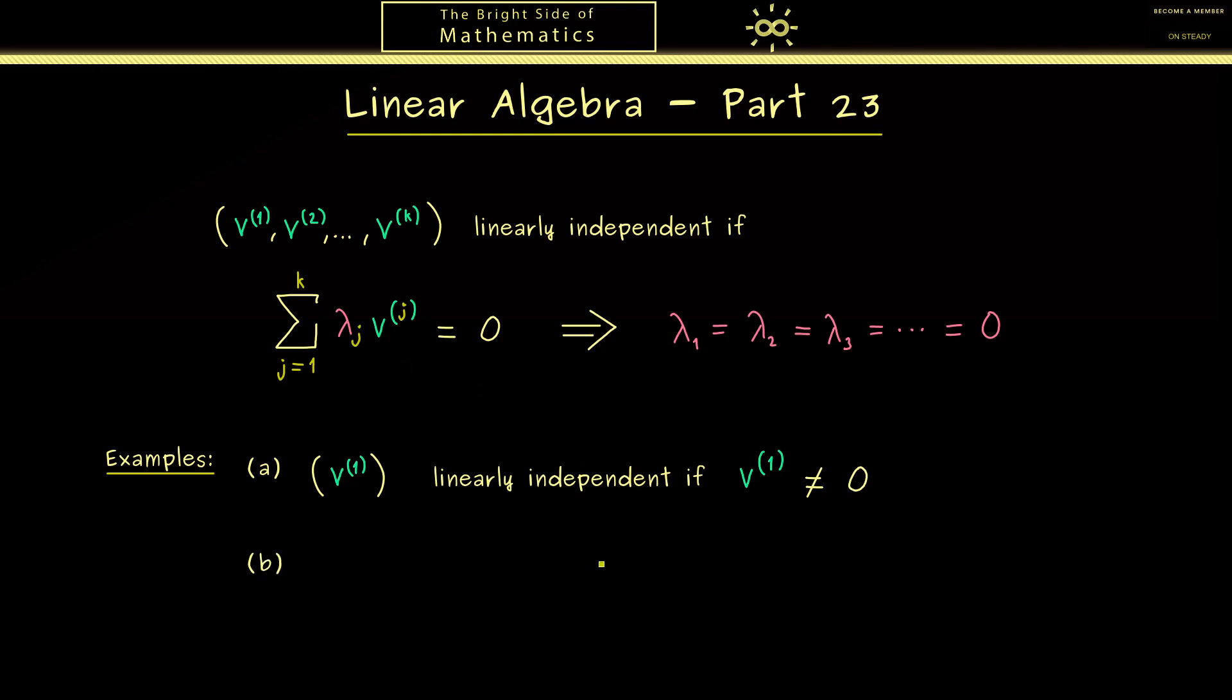Moreover, with this example you also see having the zero vector in the family changes a lot. Or more concretely, we would say such a family can never be linearly independent. It's always linearly dependent because the factor in front of the zero vector does not matter. So for example in this case here we could choose lambda_1 as 1. And then you see we have a non-trivial linear combination for the zero vector here on the right hand side. And there you see this is all one needs for a proof of this fact there.